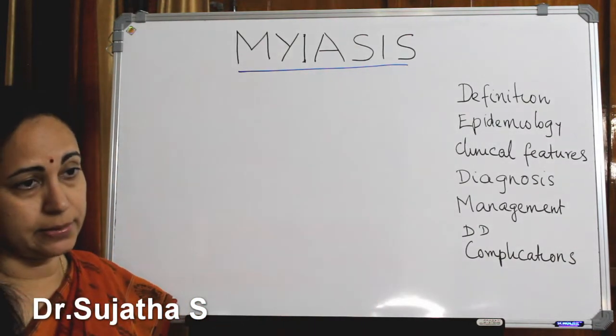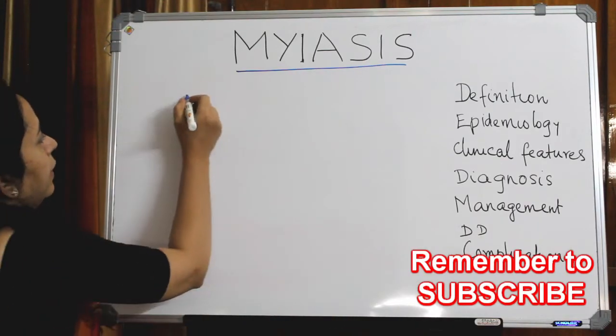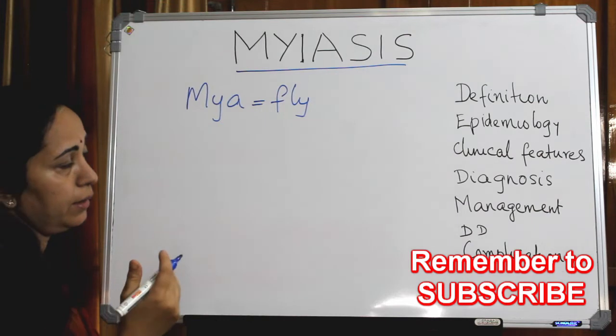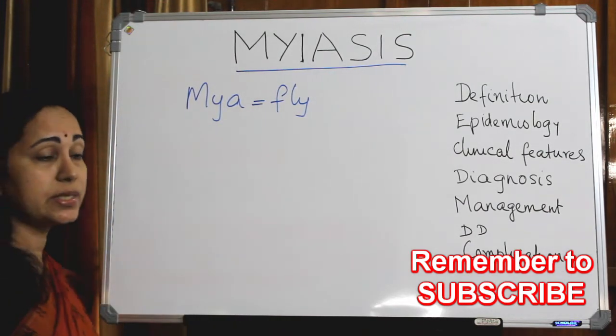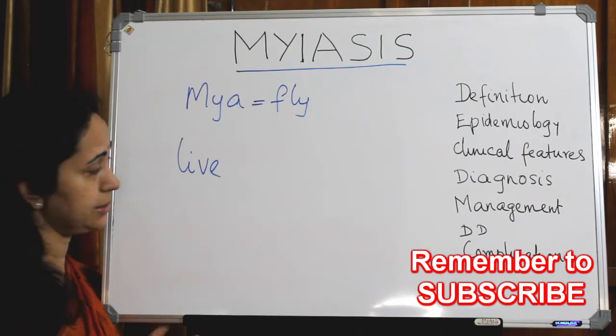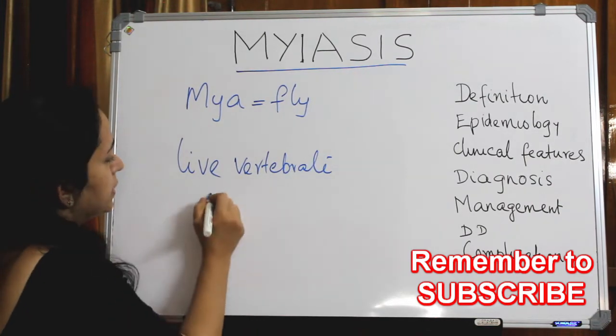What is myiasis? All of us have seen house flies. These flies lay eggs, then larvae are formed and then pupa. These larvae have a voracious appetite and are called maggots. This term came from Greek, meaning 'fry.' The definition is infestation of live vertebrates — it should be live. If they are infesting on a dead body, it is not myiasis.